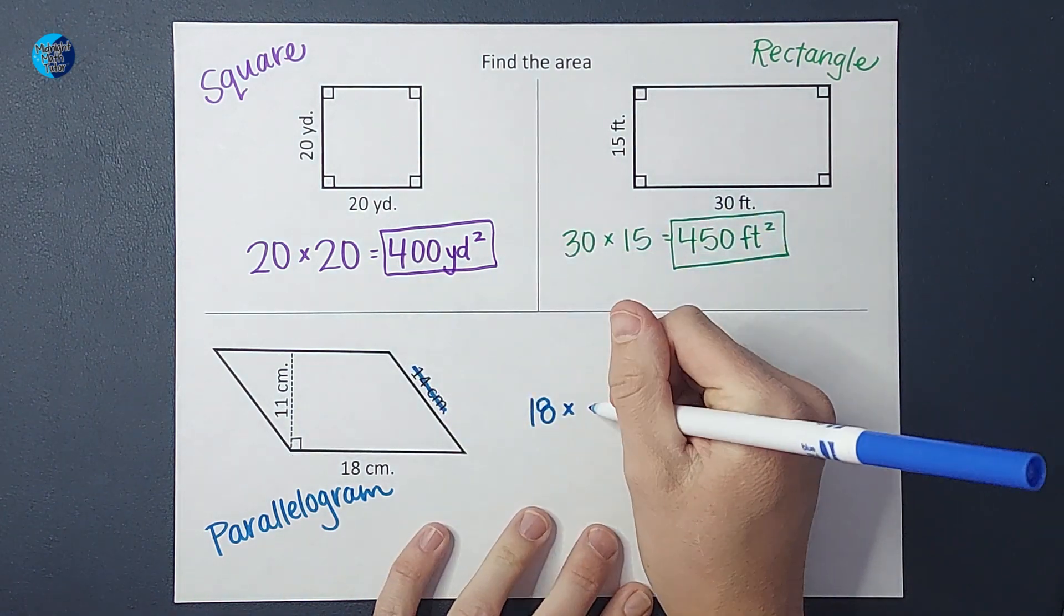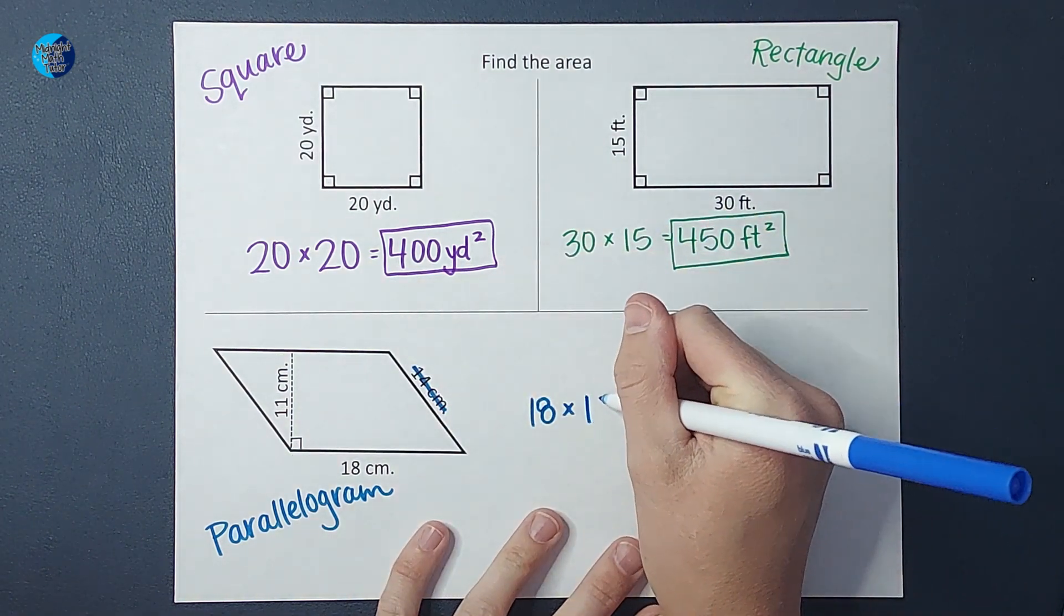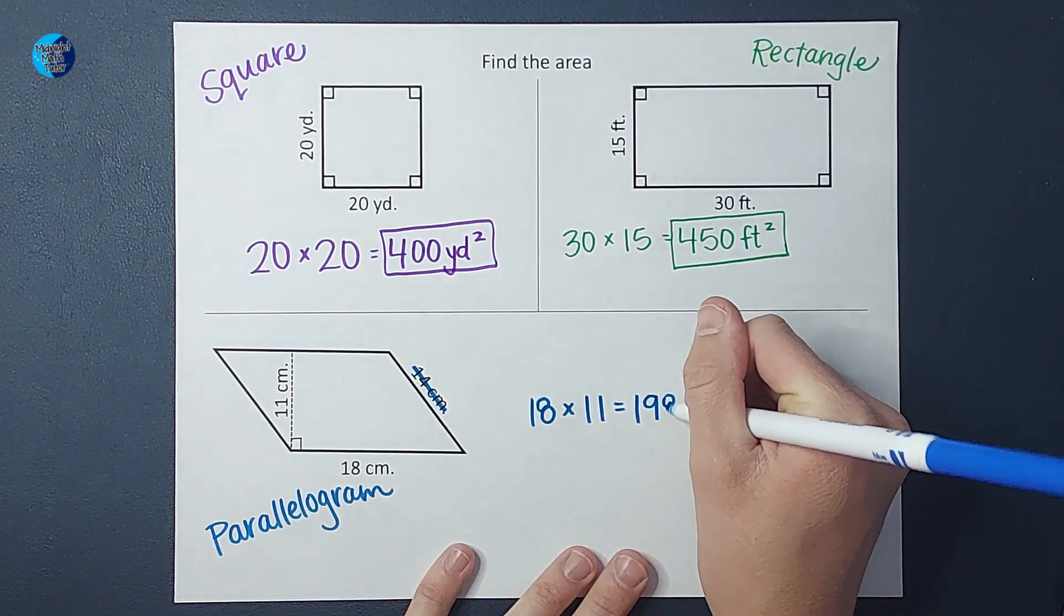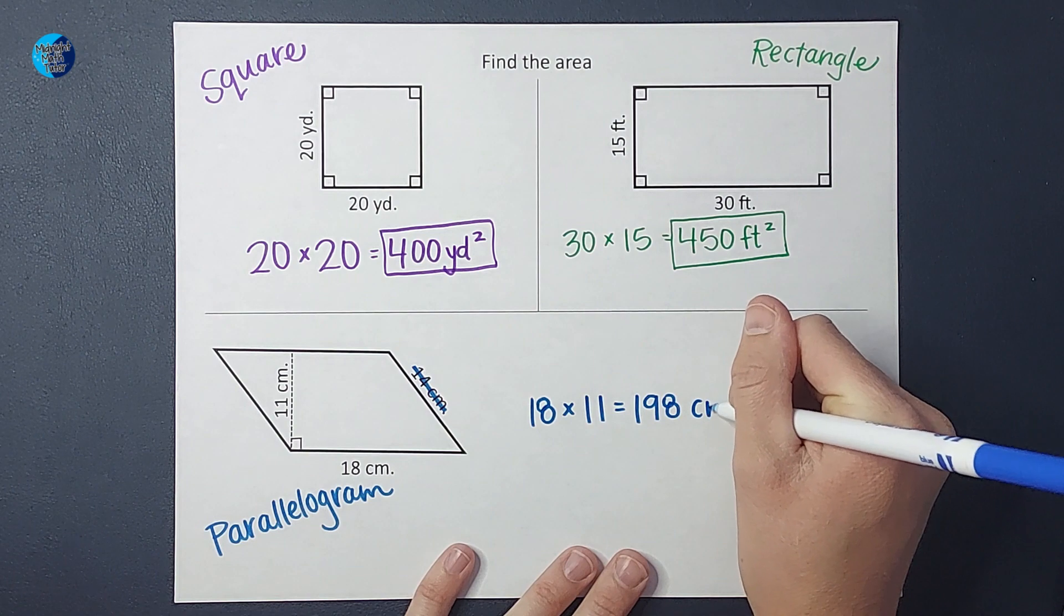So we're going to do 18 times 11, which gives me 198. And we are in centimeters, and because it's area, it is centimeters squared.